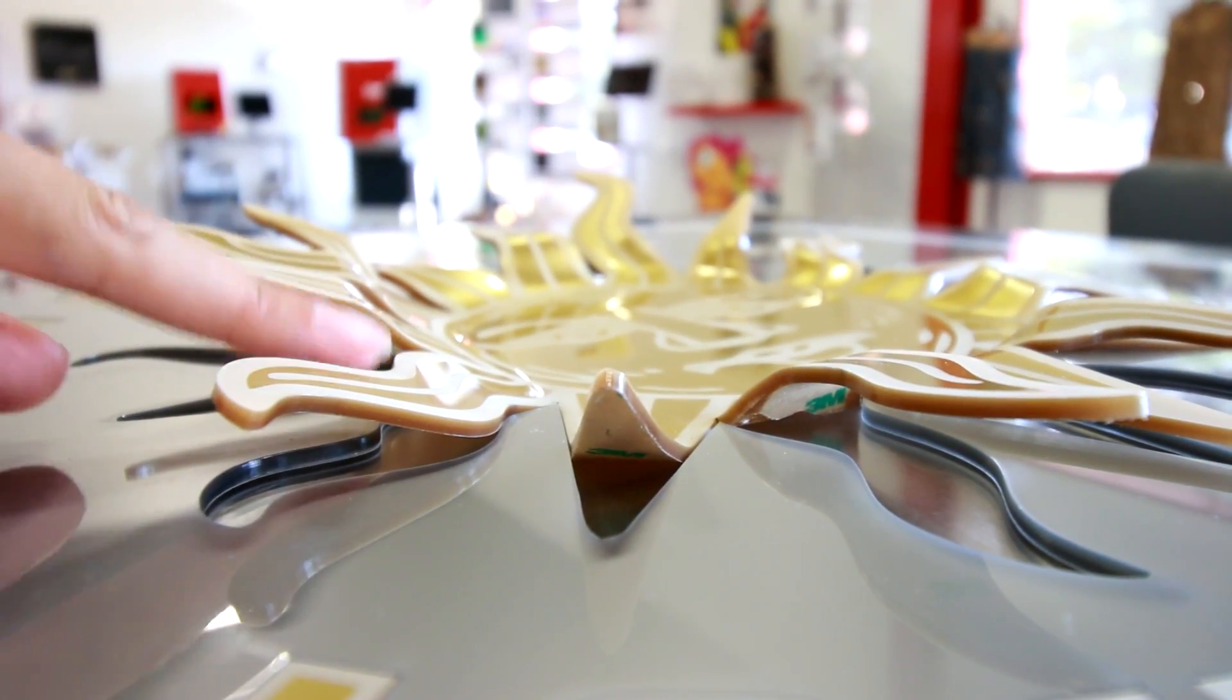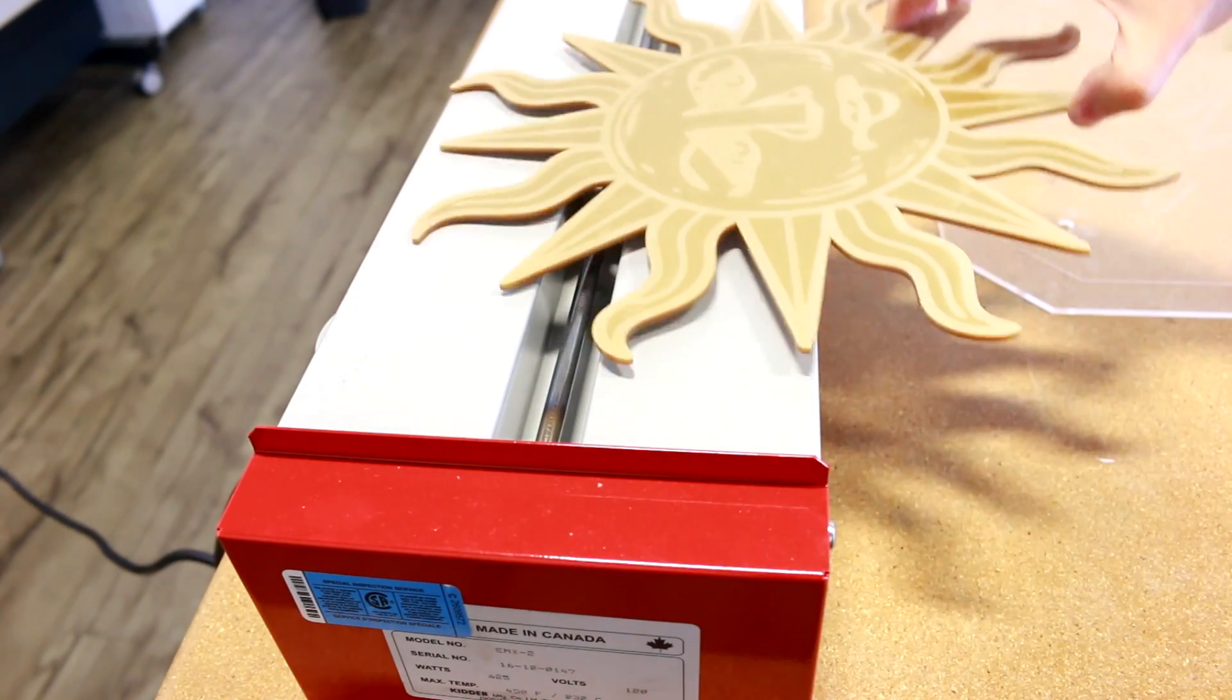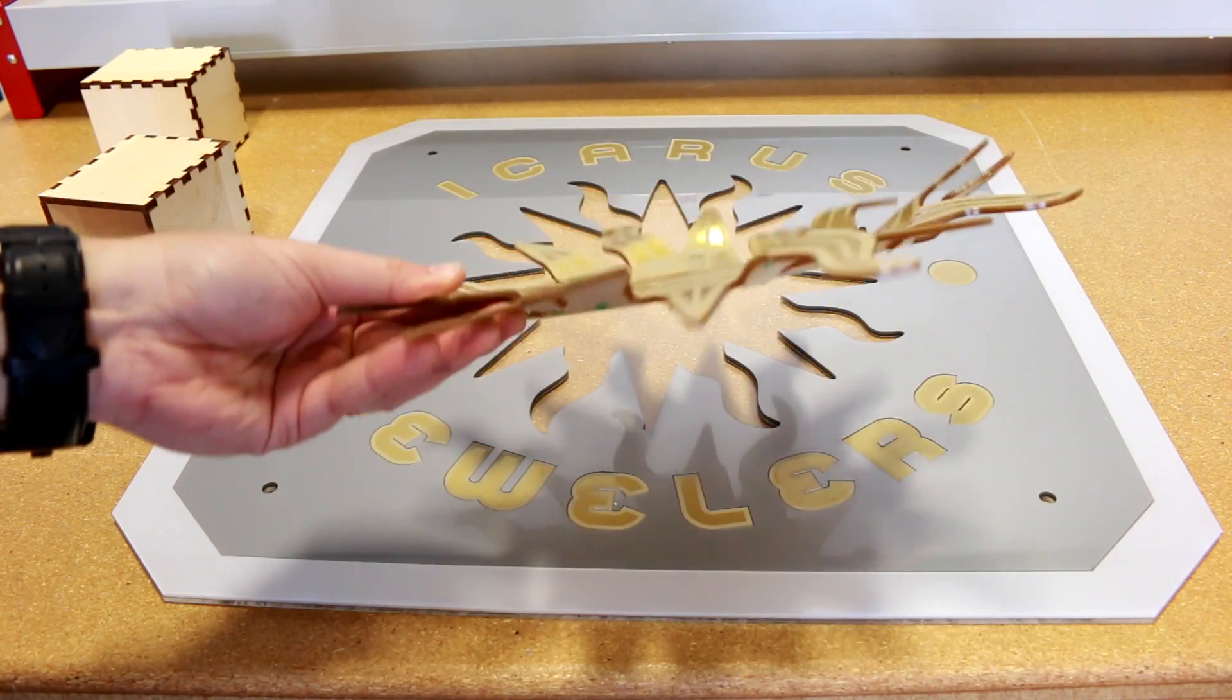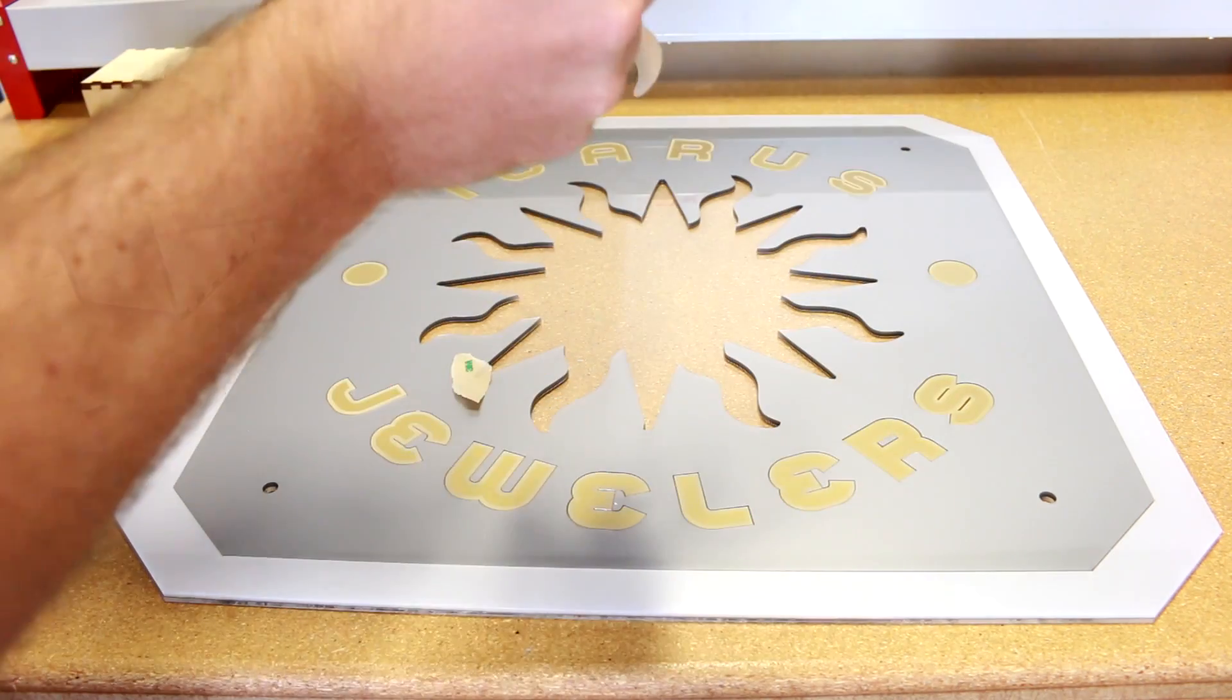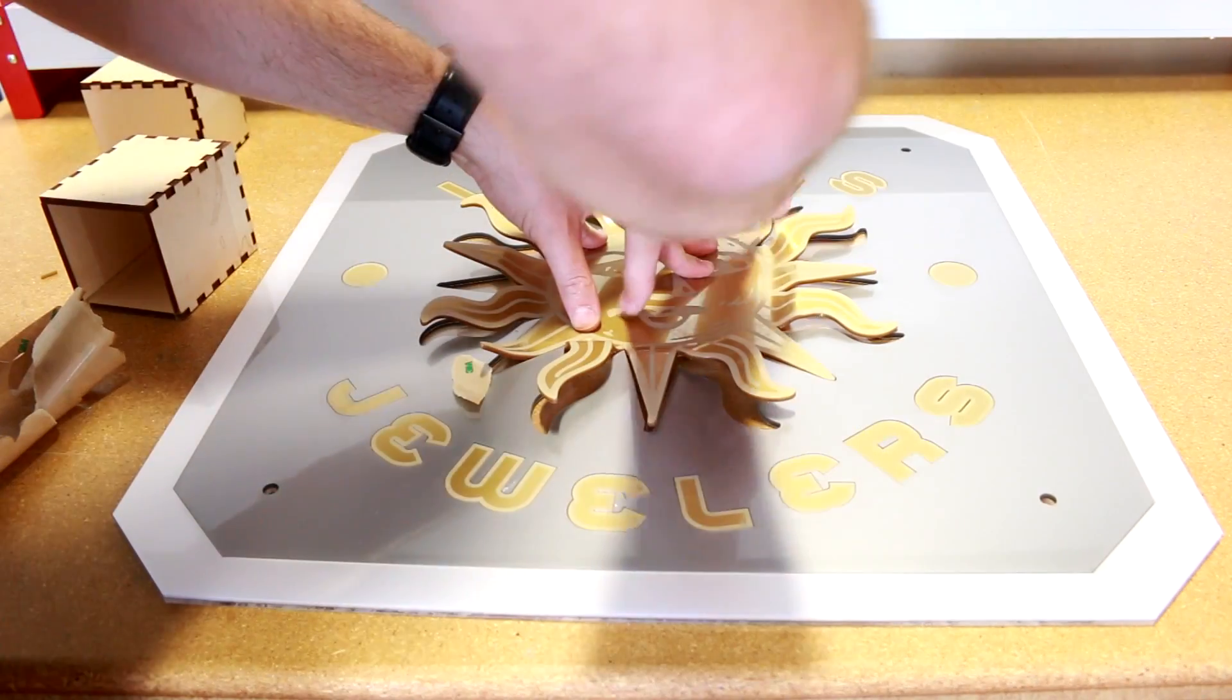To get the curved rays of the sun we use our acrylic strip heater. We make sure to preheat our strip heater for 15 minutes and then heat each ray for about 1 minute. We then bend the rays and let it cool. Finally, we glue the sun onto the acrylic base.